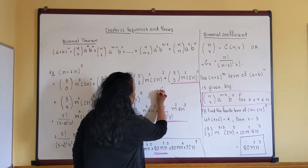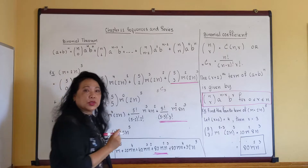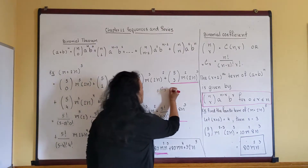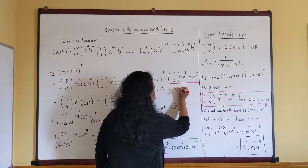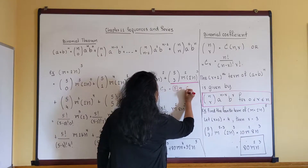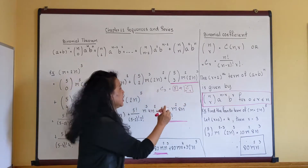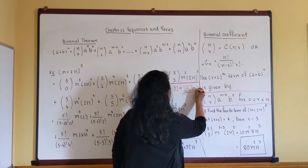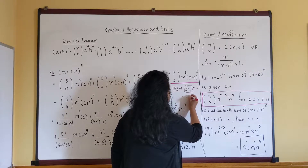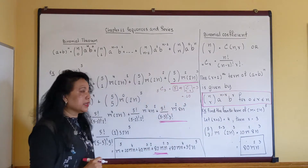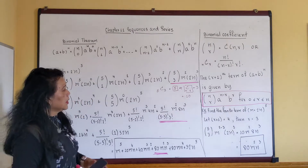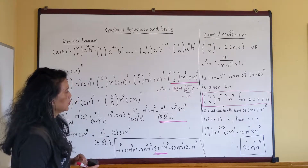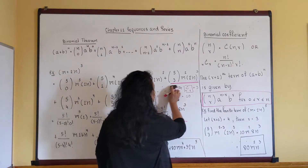Five choose three — plug it into the calculator, punch in the number five, then C(n,r), then the number three, and you should get 10. That's one way, probably the easiest. However, not everybody has those functions on their calculator, and that's okay too.